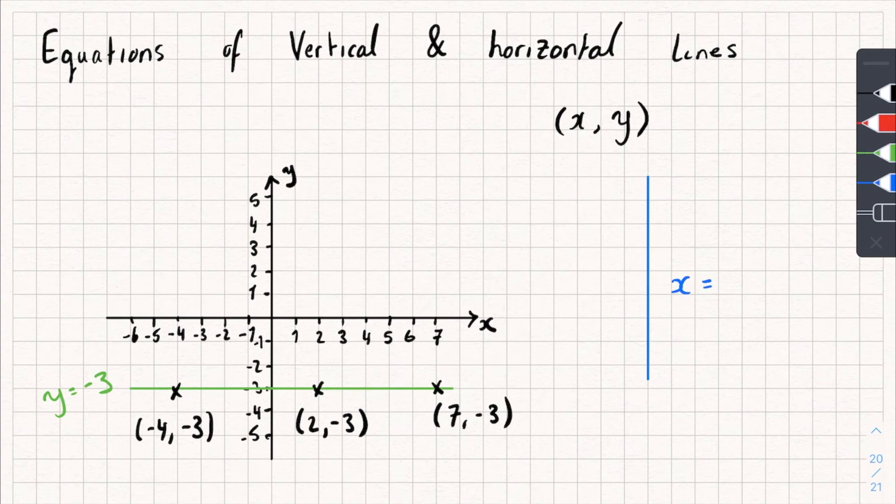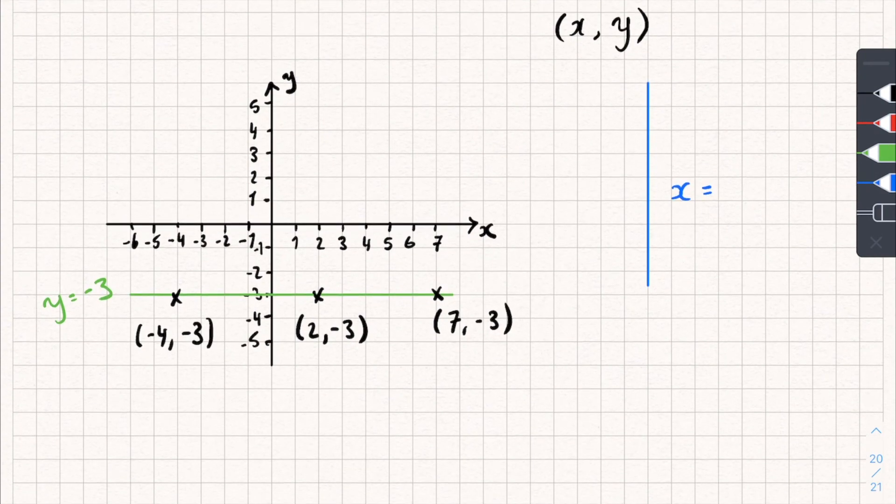And there is something else as well. It crosses through my y-axis. Remember, this one here is my y-axis. It crosses through my y-axis at negative 3 as well. And that was the same for the x one too. So we could have another rule that says, well, if I have a horizontal line like this, then its equation is always going to look like this: y equals some number.